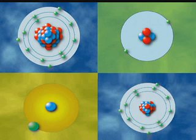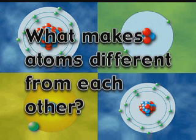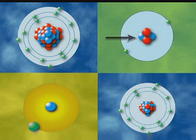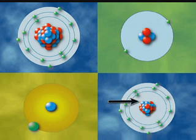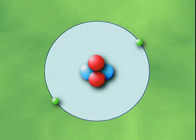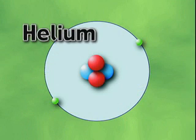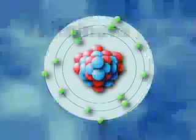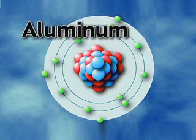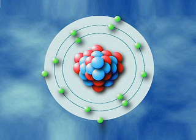What makes atoms different from each other? The answer lies in the number of protons. Different atoms have different numbers of protons. For example, a helium atom has two protons and aluminum atoms have 13 protons.